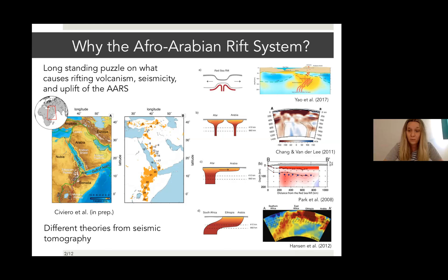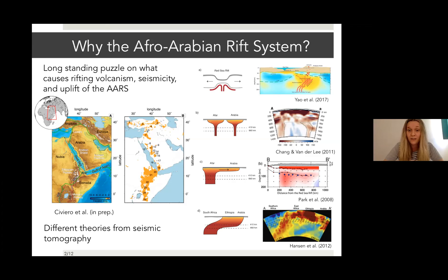The first theories propose a big mantle plume coming from South Africa, tilted toward the northeast, rising in Ethiopia and Arabia. More recent ideas involve multiple plumes: one below Kenya, one below Afar, and possibly another one below Arabia. There is also some evidence that the Afar plume has hot material spreading below thin lithosphere in Arabia and feeding the volcanism in the Arabian shield.